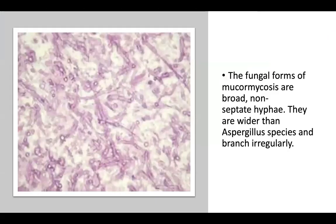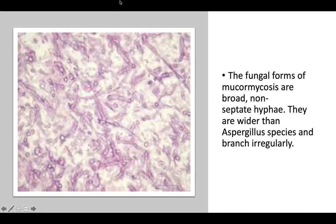The fungal forms of mucormycosis are broad and non-septate — please take note, broad and non-septate. Compare this with Aspergillus, whose fungal forms are narrower and branch irregularly. For mucor, what you bring to the exams is: broad and non-septate.